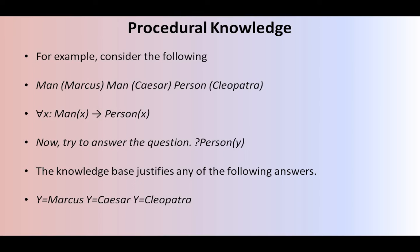...person of Cleopatra. For all x, man(x) implies person(x). So what is person(y)? The knowledge base justifies if any of the following answers: y equals Marcus, y equals Caesar, or y equals Cleopatra. You can represent: for all x, man(x) implies person(x). What is person(y)? It can be anything from the above — man of Marcus, man of Caesar, and person of Cleopatra. Such kind of knowledge representation is called procedural knowledge, where we are substituting the value of y.